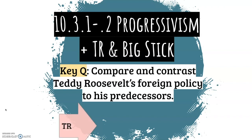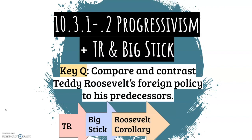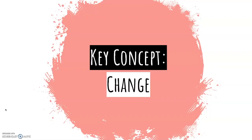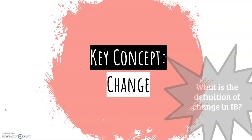Last video I explained Teddy Roosevelt to you — how he was already a big change for the presidency. In this video I'll go over how he's a big change for our foreign policy through Big Stick Diplomacy, his Roosevelt Corollary to the Monroe Doctrine, and the Panama Canal. Our bullet asks for the impacts of the foreign policy, so we have to focus on how Teddy's decisions affected the United States and the other countries in Latin America. We're also focusing on change — key concept.